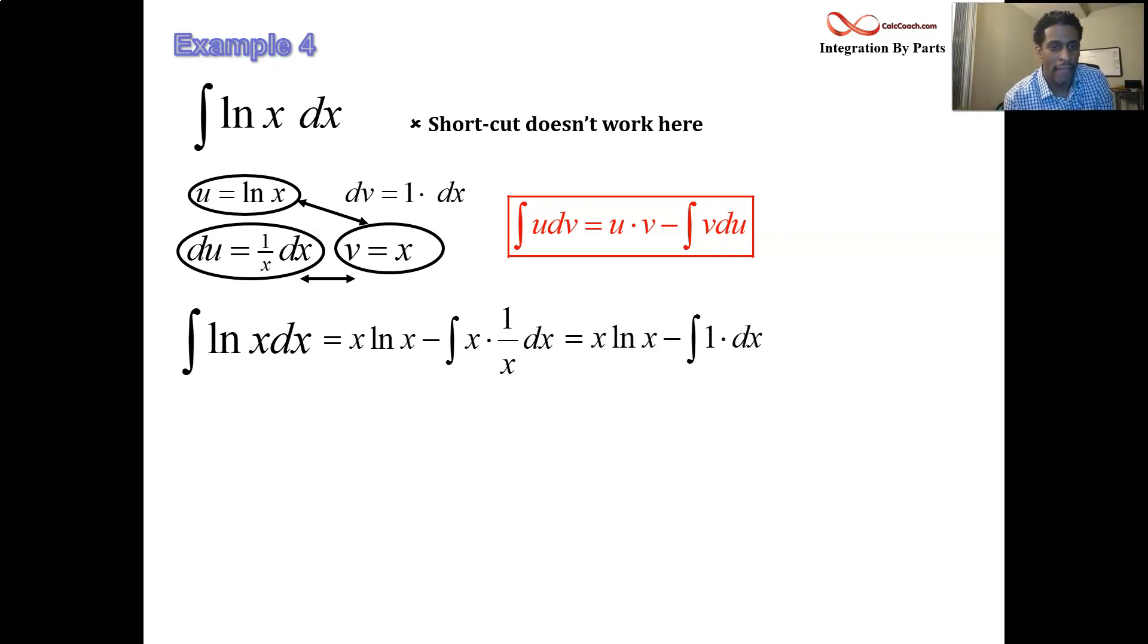But what happens with x times 1 over x is just a 1. And so we have the x log x from the uv and then minus the integral of 1 dx. This is an integral that we've done already. The integral of 1 dx is just x.